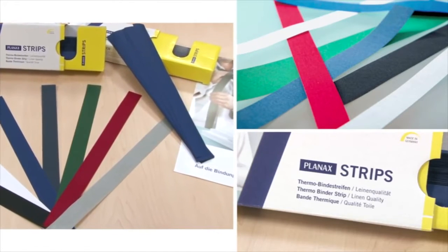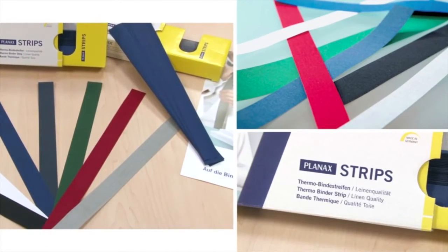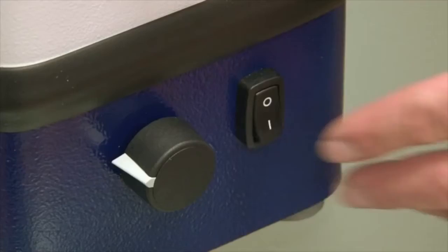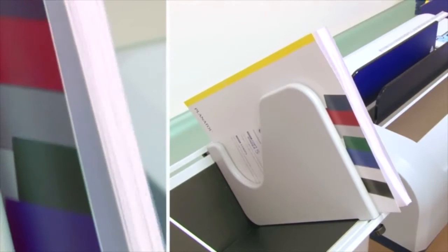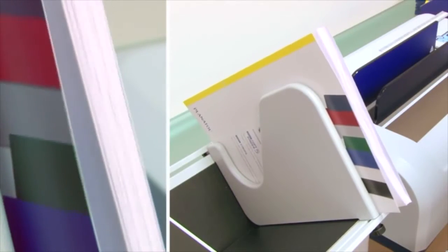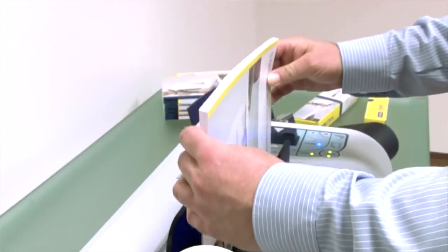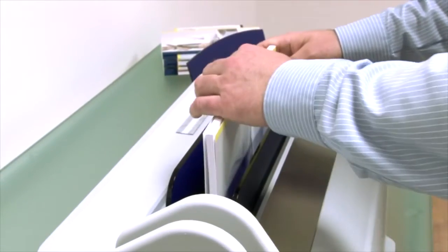The linen Planex strips serve as a binding strip for the spine of your document. Knock up the paper stack with the Planex jogger 2, put the paper stack into the copy binder and press the start button.